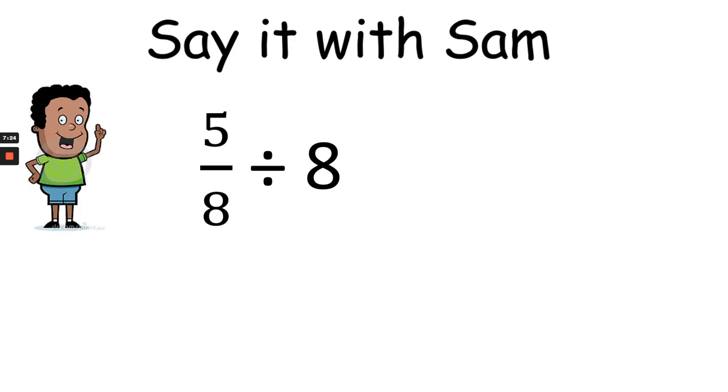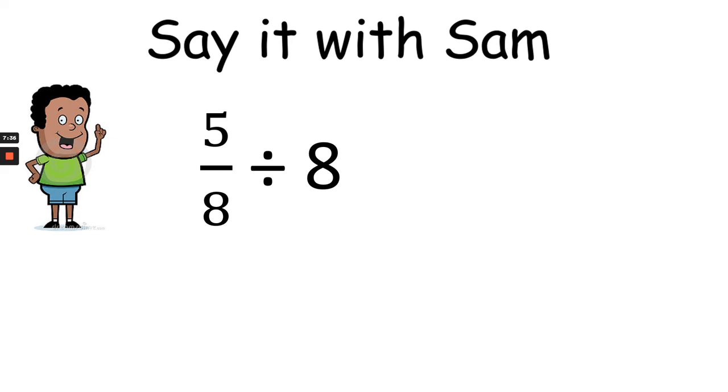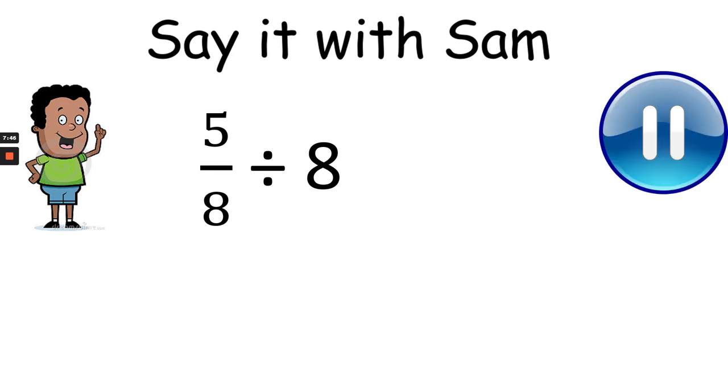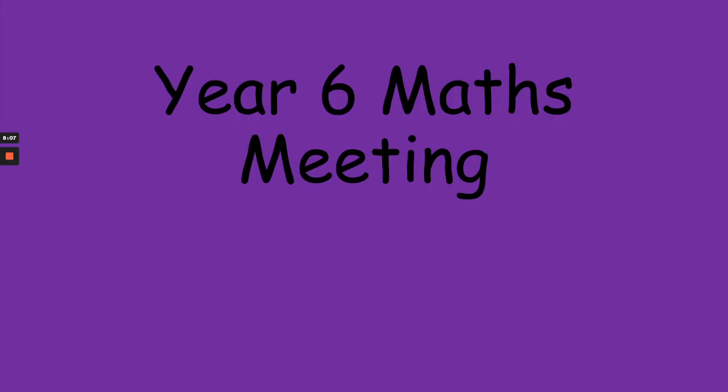Alright. Back to Sam. Sam's now dividing by 8. When we divide by 8 we are finding 1 eighth. I am finding 1 eighth of 5 eighths. Say it for me year 6. Let's try saying it again. I am finding 1 eighth of 5 eighths. Try again. Alright. Pause your video. Write it down and solve it. Alright. Let's see how we got on with this one. I am finding 1 eighth of 5 eighths. 1 times 5 gives me 5 and 8 eighths are 64. 5 sixty-fourths. And that's your answer. Well done again year 6.